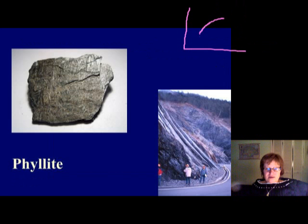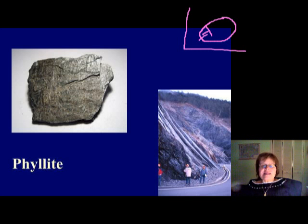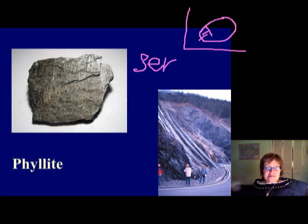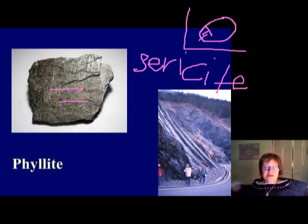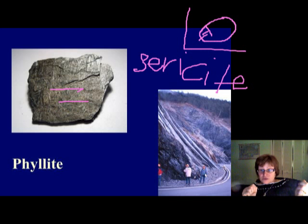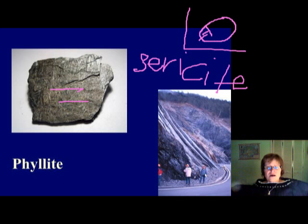The next rock is phyllite, which is still low grade. The only difference between slate and phyllite is that phyllite has microcrystalline muscovite — we call this sericite. The texture is still foliated, and the mineral composition is clay minerals plus sericite. This fine-grained muscovite distributed along the foliation gives the rock a really shiny luster, making it easy to distinguish from slate.